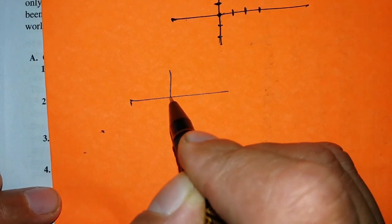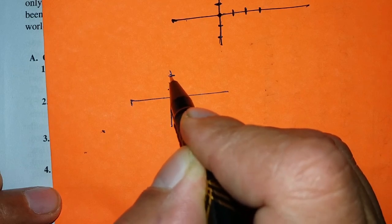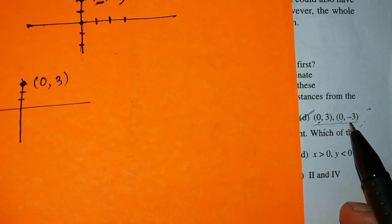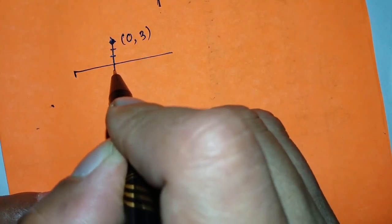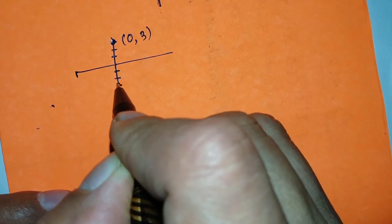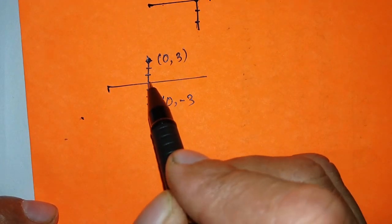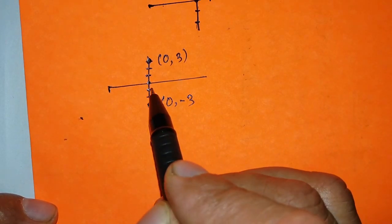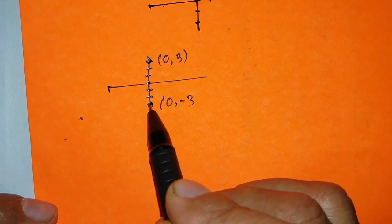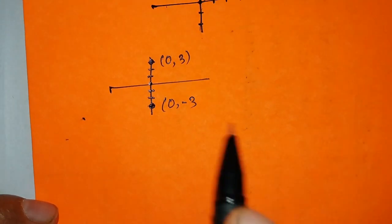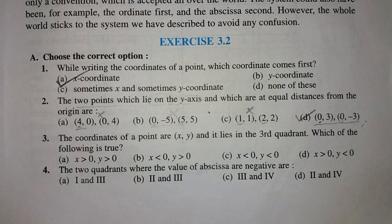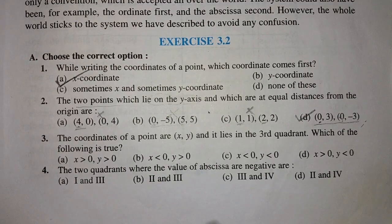So we have point (0,3): X is 0, Y is 3. And the other point is (0,-3): X is 0, Y is -3. These two points are at equal distance from the origin — 3 units above and 3 units below — and they both lie on the Y axis. So the correct answer is the fourth option, D.